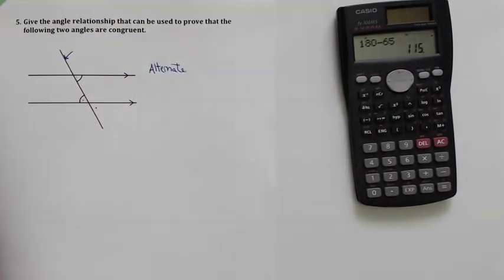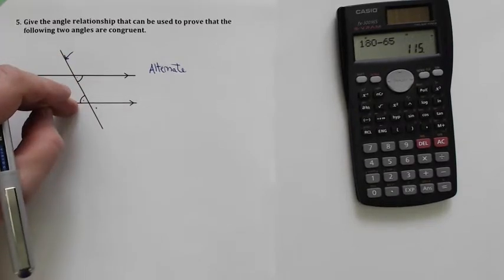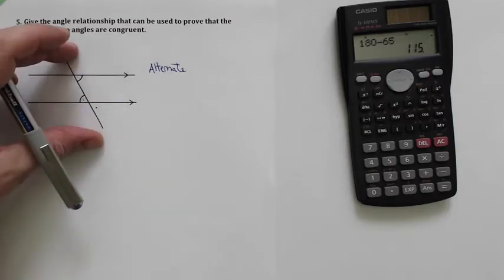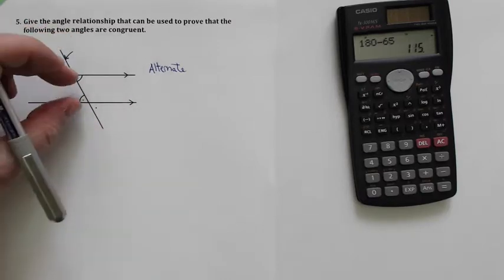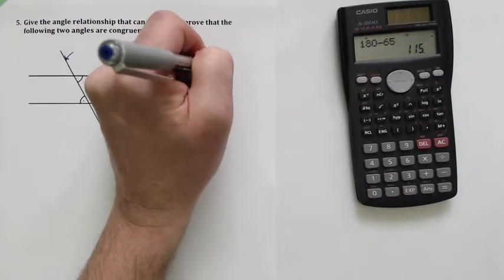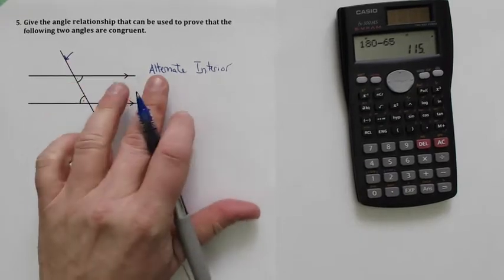And so since these two are on opposite sides, they're alternate angles. Now they're also both inside the parallel lines. They could be outside, that would make them exterior, but these two angles are inside the parallel lines. So these are called alternate interior, and it's always going to work the same way when you're trying to figure out some of these angle proofs.